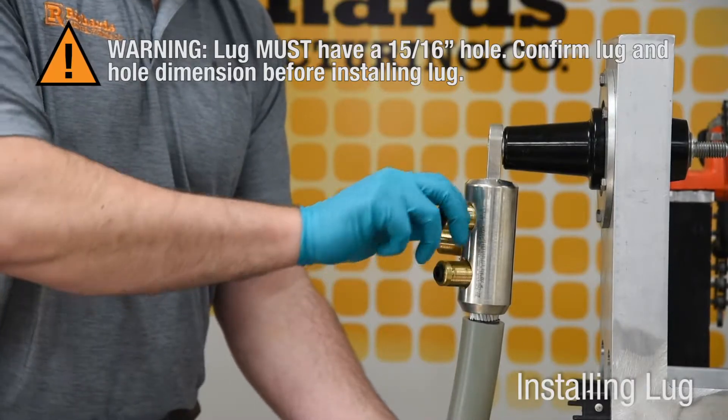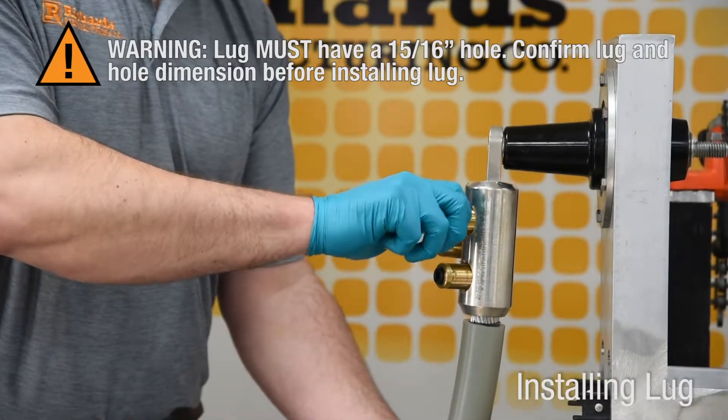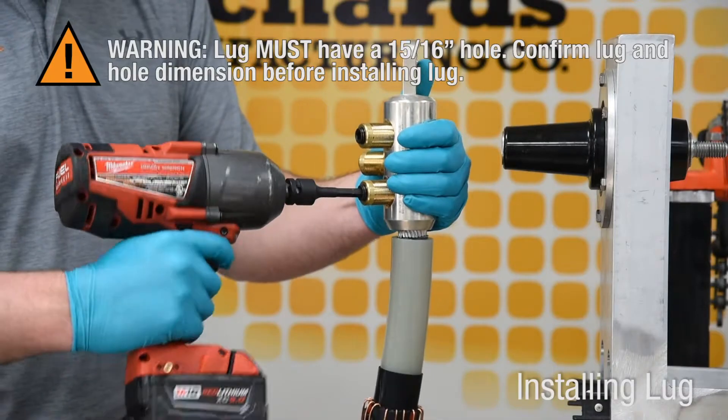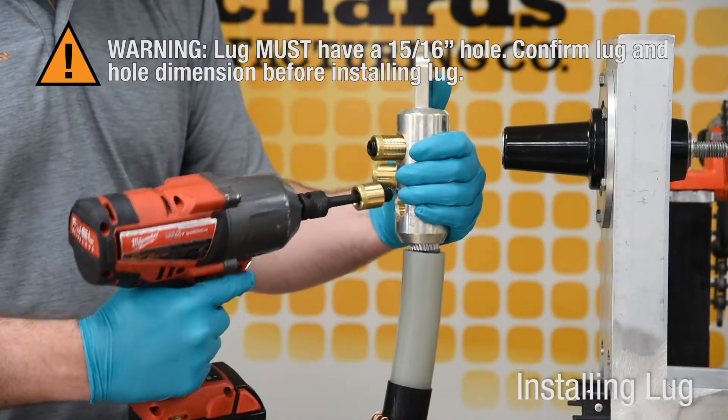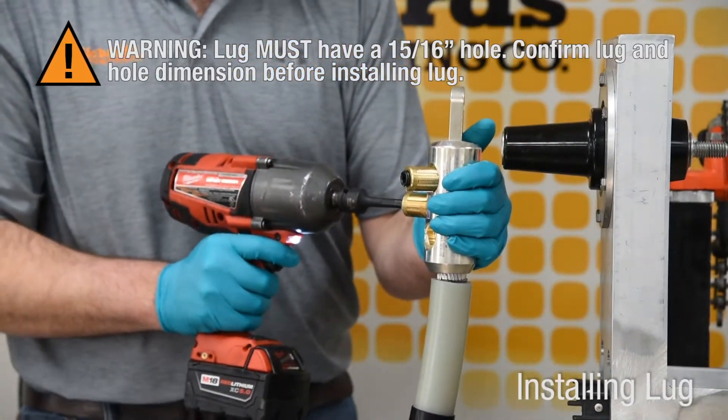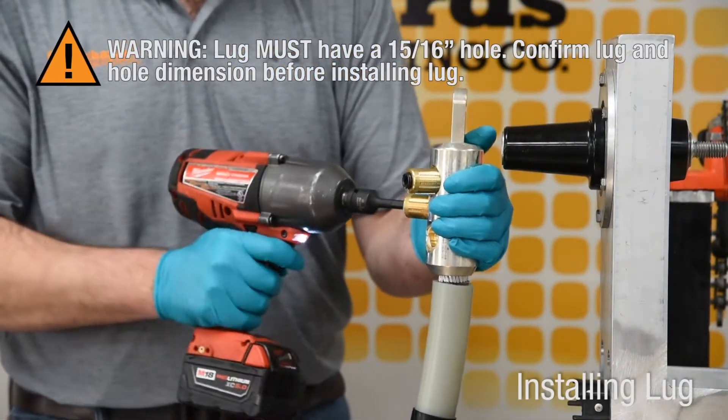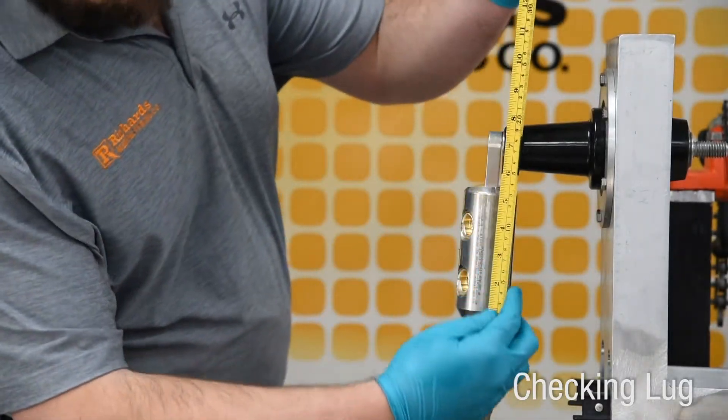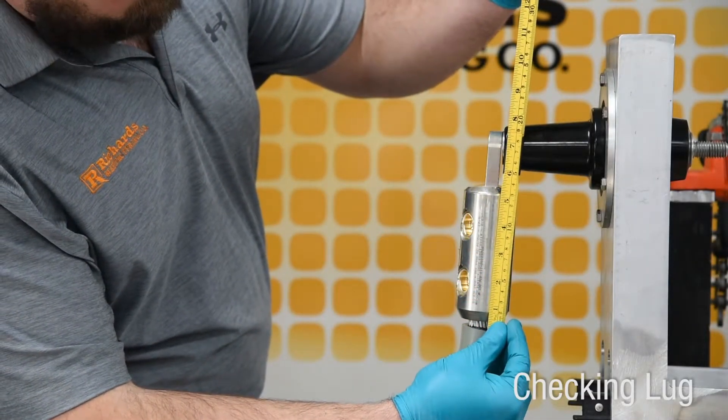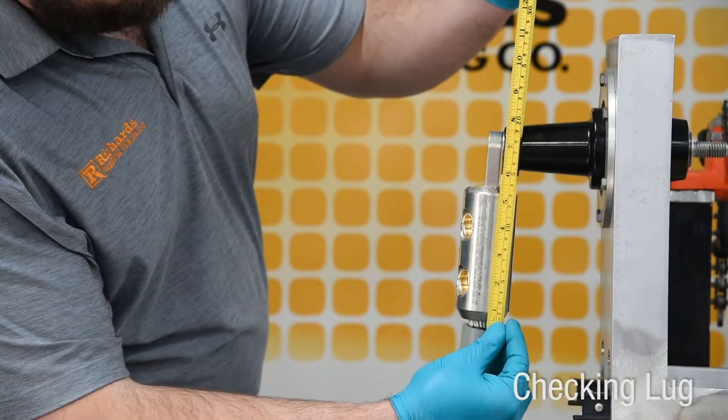Install either a compression or shear bolt lug with 15 sixteenths inch threaded hole according to manufacturer's instructions. Lug must have a 15 sixteenths inch hole. Confirm lug and hole dimension before installing lug. Confirm distance from top surface of lug to insulation cutback does not exceed 7 and 1 quarter inches.